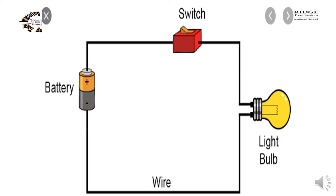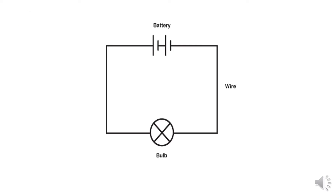However, it is known as the conventional current direction. When circuits are drawn, symbols are used. Here we use the circuit symbols to draw the circuit.